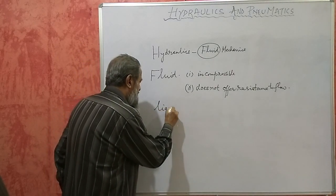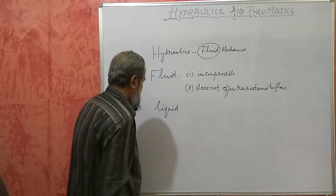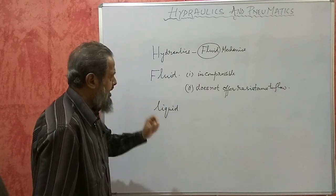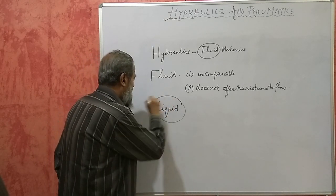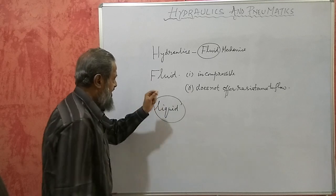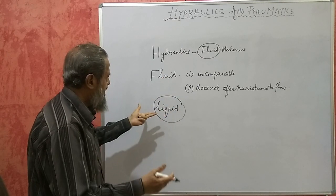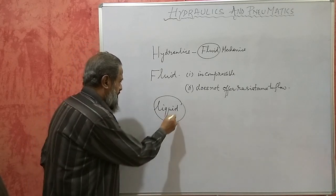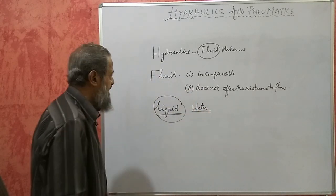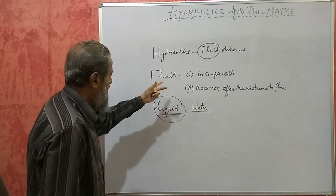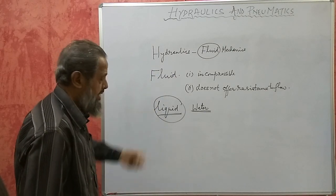Liquid is also a state of substance. In the case of a liquid, it is very, very slightly compressible and it offers very little resistance to flow. So in this subject, we consider all liquids to be fluids, though they are slightly compressible and offer a little resistance. Because we don't get an ideal fluid, these are called real fluids. The most commonly occurring liquid on earth is water, which is the substance we deal with in hydraulics. Hydro means water, so it is the study of water predominantly.